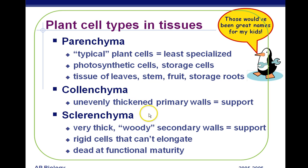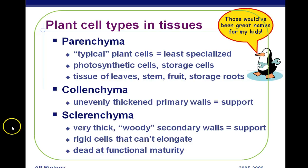Live support versus dead support. Another thing about sclerenchyma is that they have a woody substance to keep it rigid, called lignin — spelled L-I-G-N-I-N. Lignin is the woody stuff of wood, and it's found in sclerenchyma.